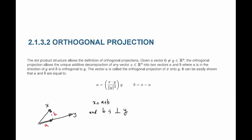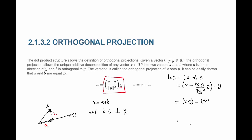The orthogonal projection is defined as follows: a is equal to (x dot y) divided by norm y squared, in the direction of y. So this is a number and y is a vector. You can easily show that b is indeed perpendicular to y by taking b dot y, where b is equal to x minus a. Substituting a, this equals x dot y minus (x dot y divided by norm y squared) times y dot y. Since I'm in a Euclidean vector space, norm y squared equals y dot y, so this equals zero. Therefore b is perpendicular to y.